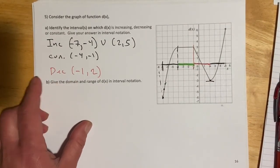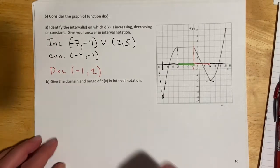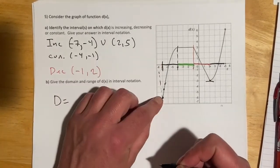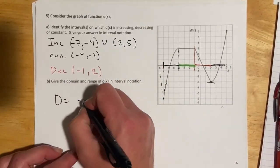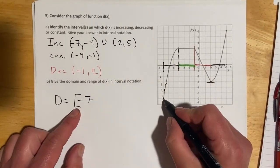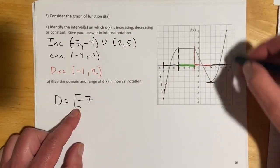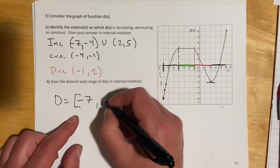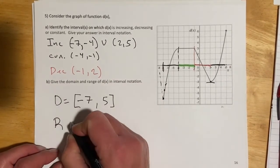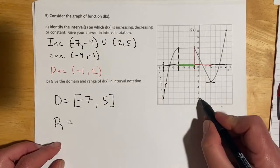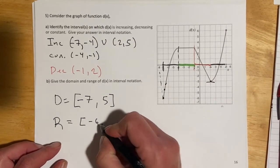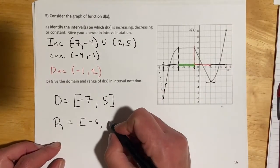For part B, domain and range for this graph. The domain: farthest to the left was negative 7, and I want a bracket because that point was included. That goes through 5. So domain is [−7, 5]. The range: the lowest the graph goes is negative 6 and the highest is 6. So range is [−6, 6].